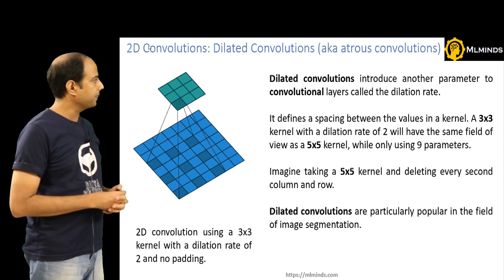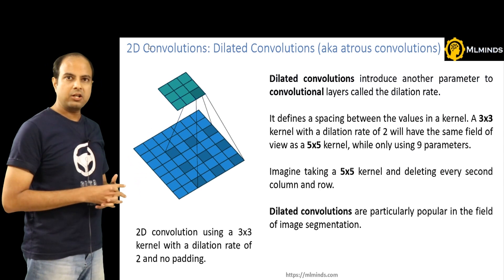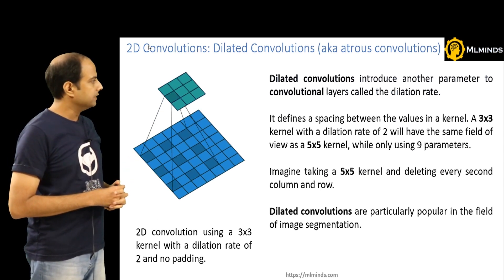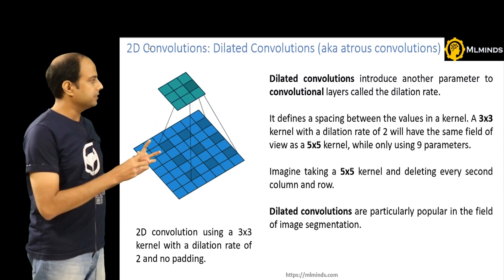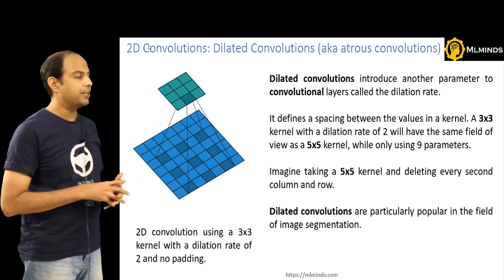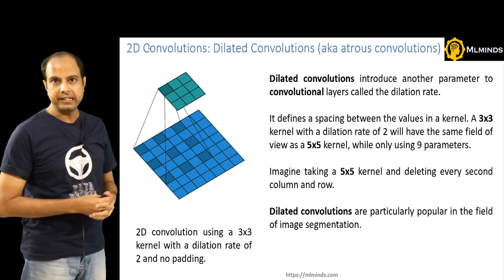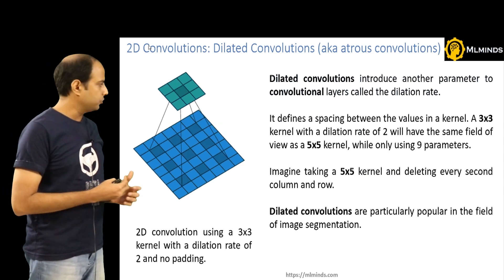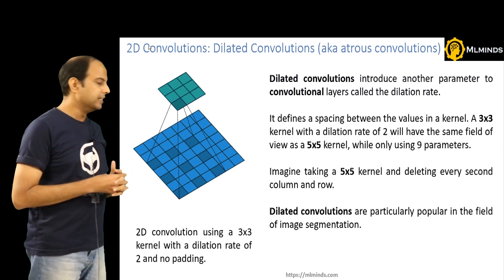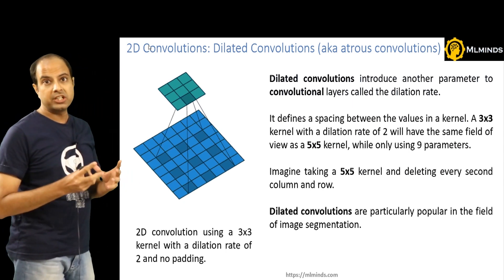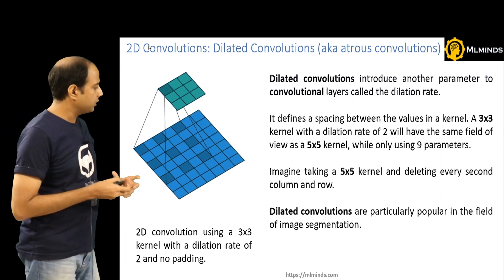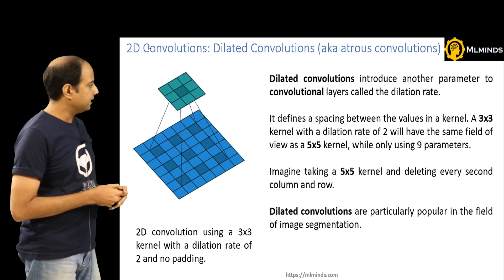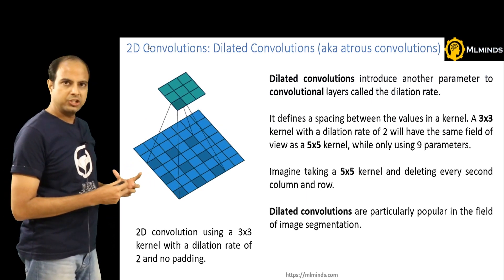What is the difference between a typical 2D convolution and a dilated convolution? Dilated convolutions are also called atrous convolutions. They introduce another parameter to the convolution layer called the dilation rate. What this animation shows is a 2D convolution with the same 3×3 kernel but with a dilation rate of 2.